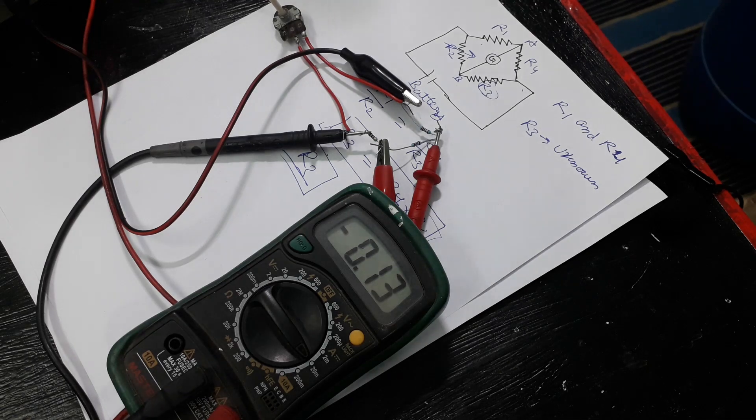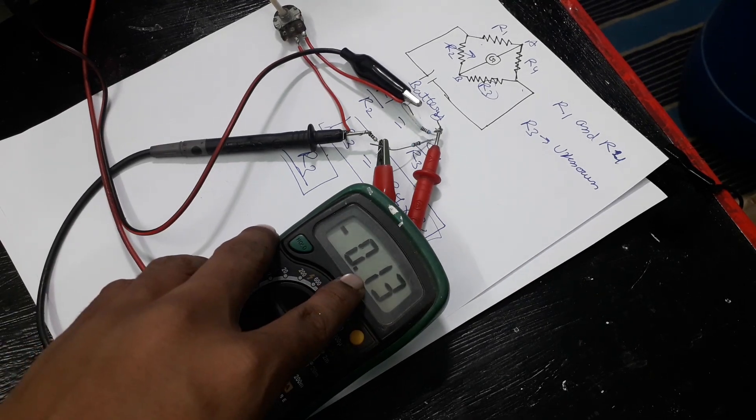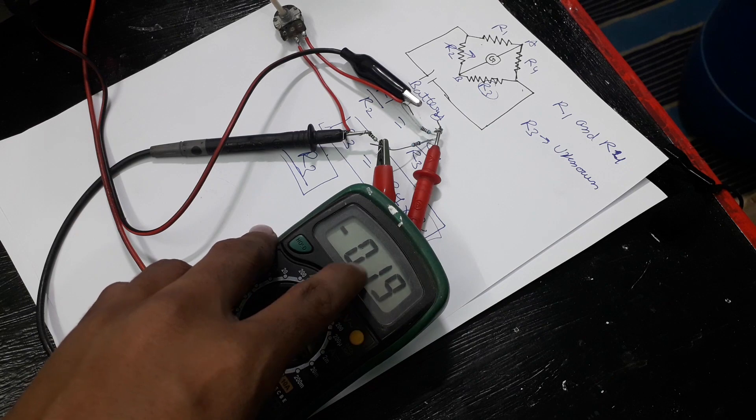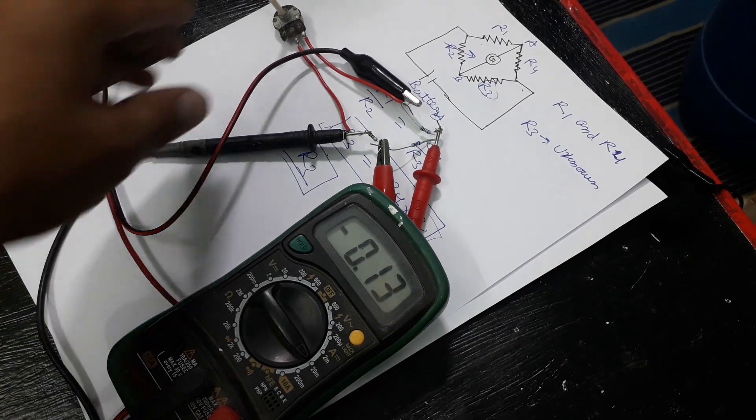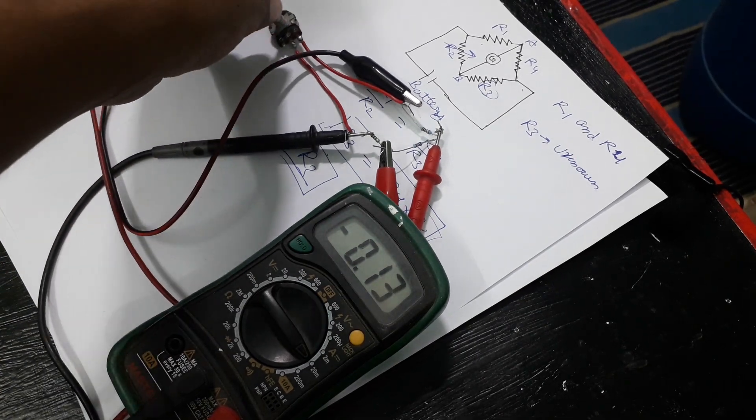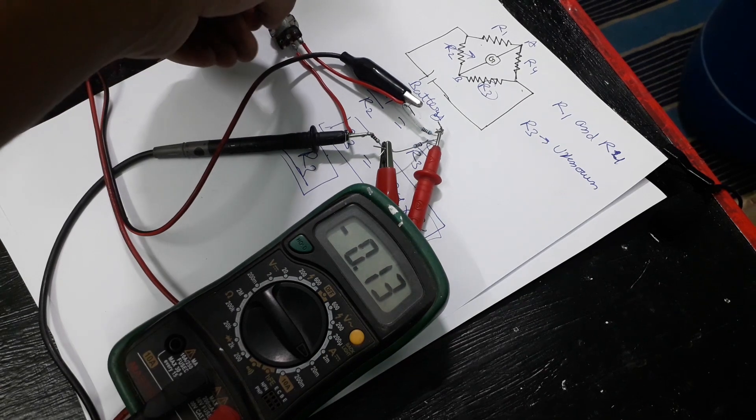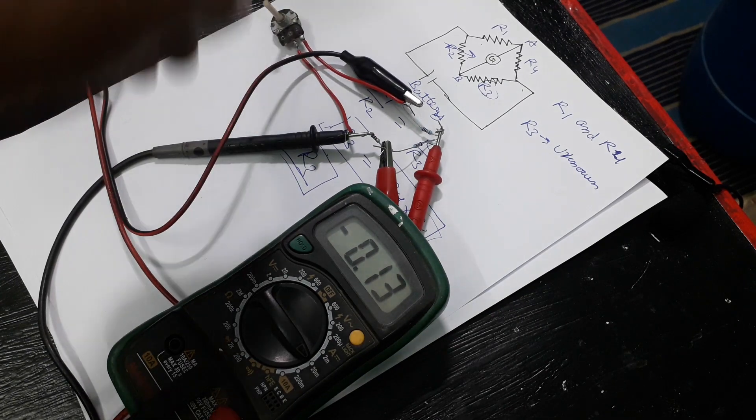Now everything is set up and the multimeter is showing 0.13 milliamps. Now let's rotate the variable resistance so that we will get zero amps at the multimeter.